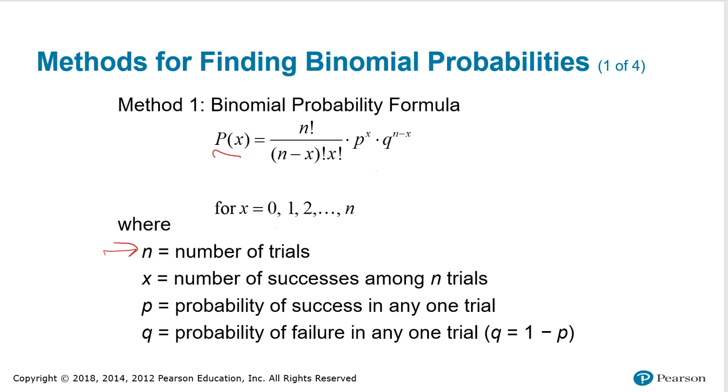n is the number of trials, x is the number of successes among the n trials, p is the probability of a success in any one trial,